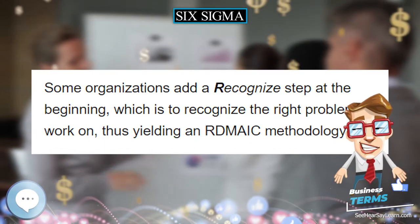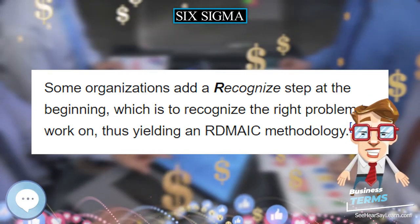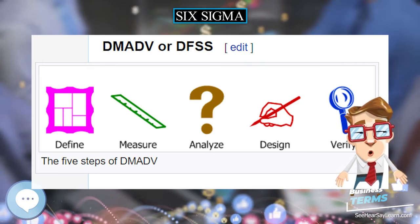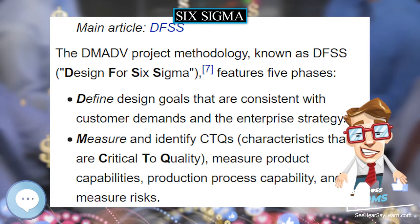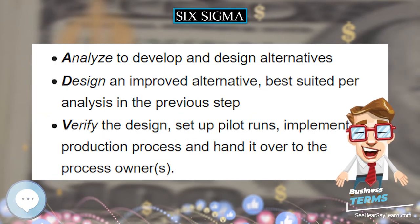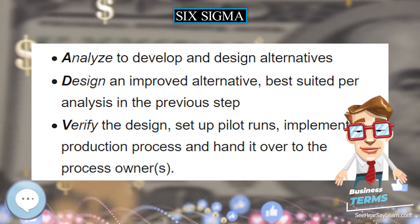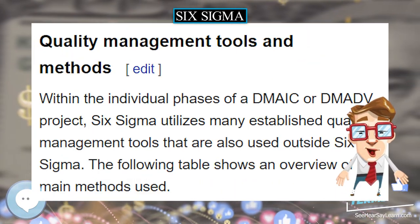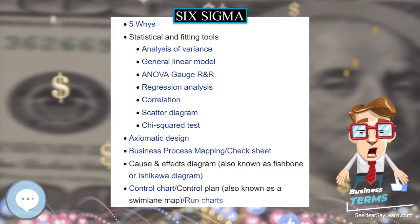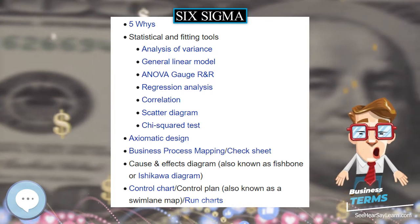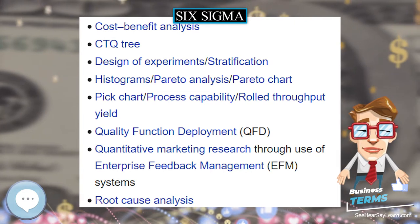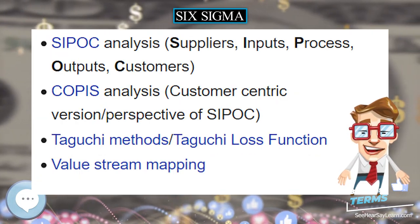The term Six Sigma comes from statistics and is used in statistical quality control, which evaluates process capability. Originally, it referred to the ability of manufacturing processes to produce a very high proportion of output within specification. Processes that operate with Six Sigma quality over the short-term are assumed to produce long-term defect levels below 3.4 defects per million opportunities, DPMO.